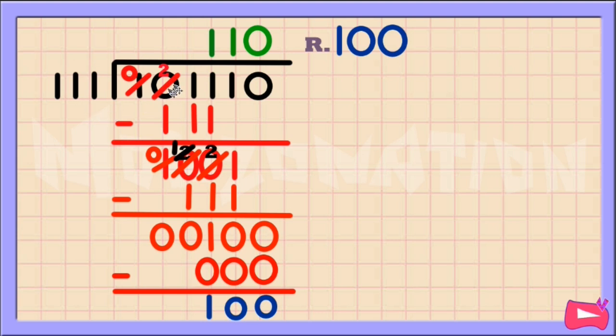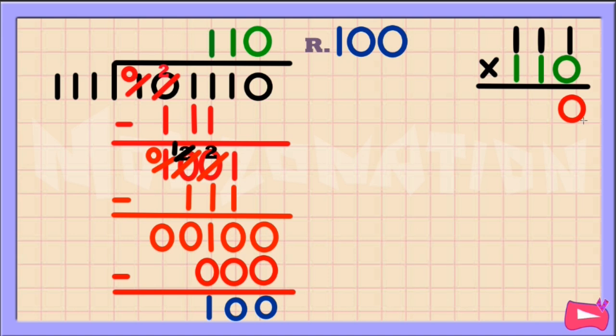Now, if you want to check your answer, let's multiply our divisor to our quotient. 0 times 1 is 0, 0 times 1 is 0, 0 times 1 is 0. 1 times 1 is 1, 1 times 1 is 1, 1 times 1 is 1.